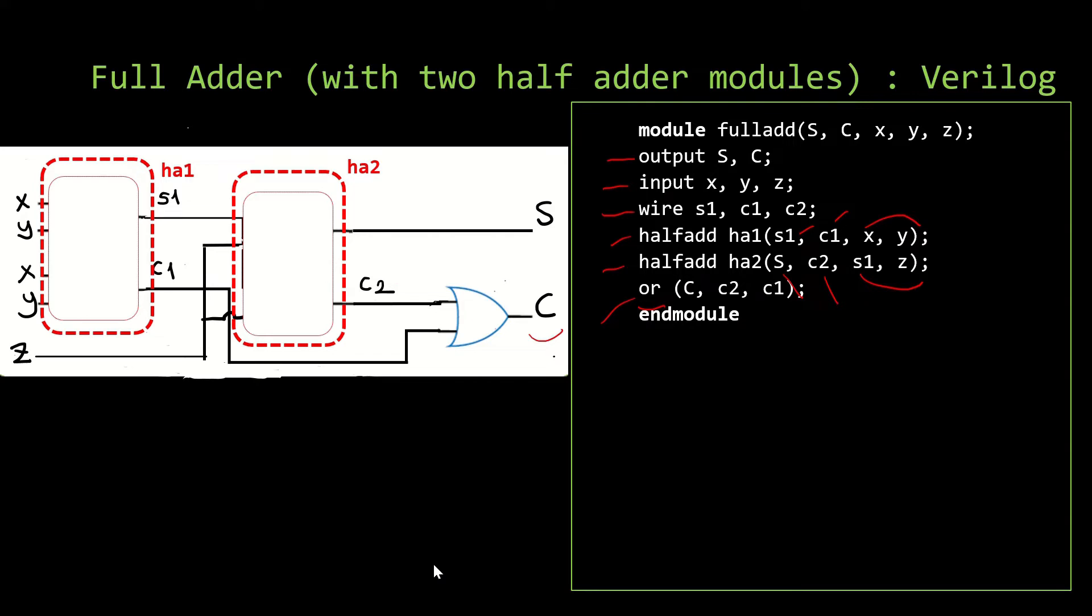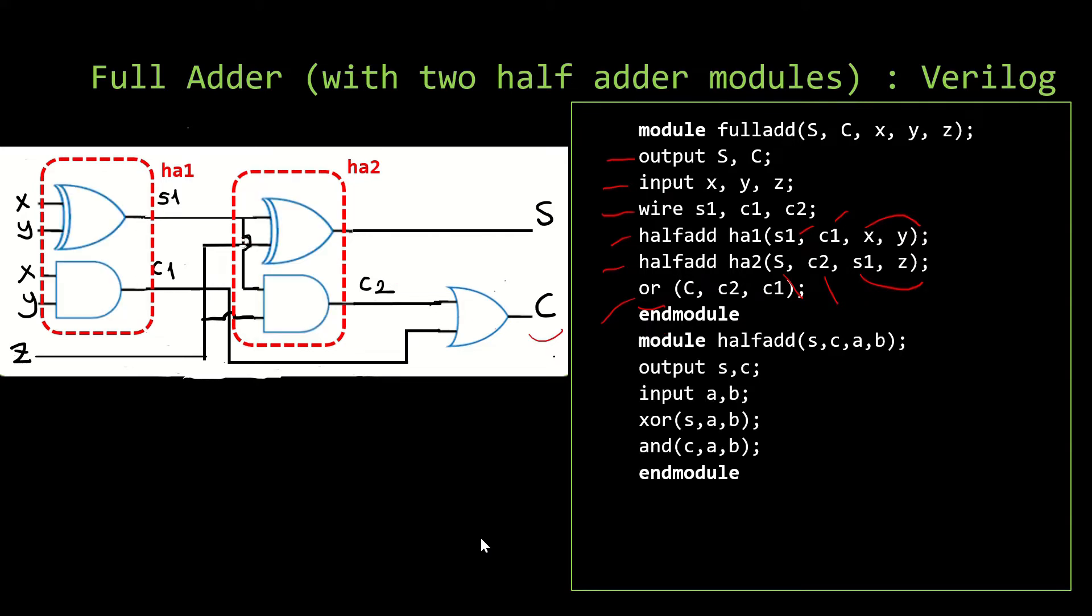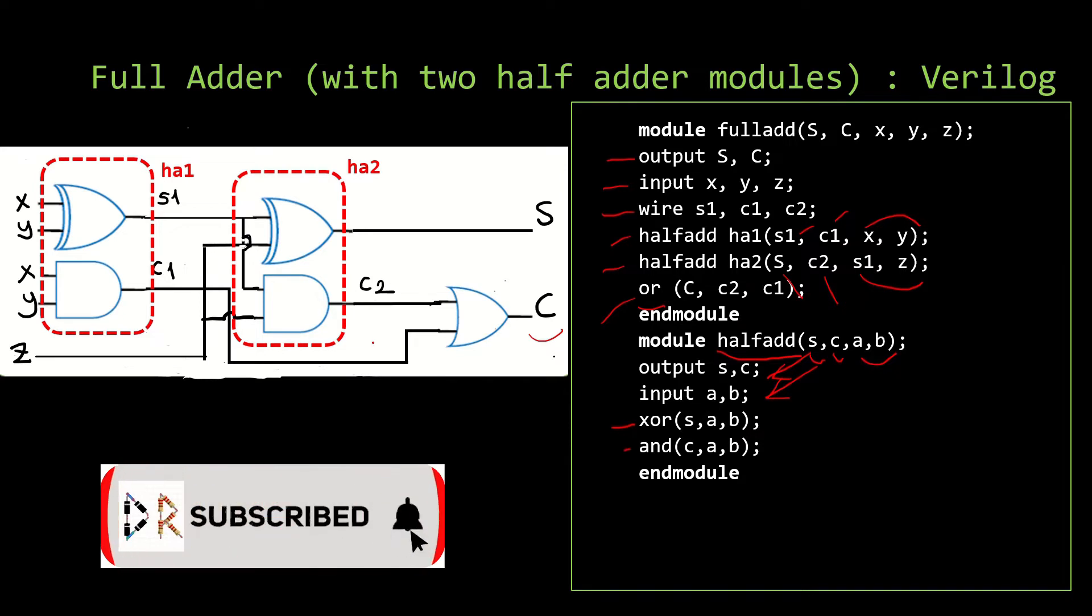However, we should also define what's going on inside the half-adders. You can see that here we are defining the half-adder module which has outputs of S and C and inputs of A and B which are defined right here. And we say that there is an XOR gate and an AND gate inside this half-adder.